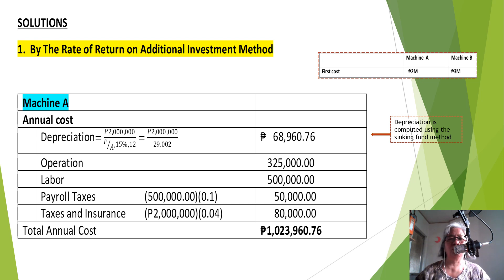The operational cost for machine A is $225,000. Labor cost is $500,000. Payroll taxes at 10% of labor is $50,000. Taxes and insurance at 4% of the first cost of $2 million gives $80,000. Hence, the total annual cost for machine A is $1,023,960.76.